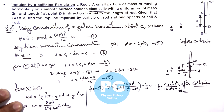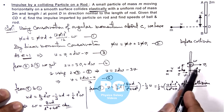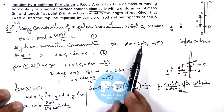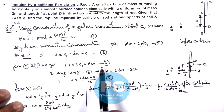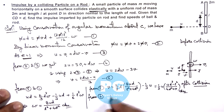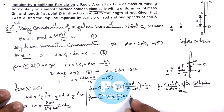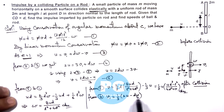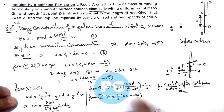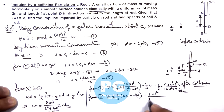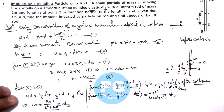The final speed of the rod v1 can be obtained from equation 4: v1 = (1/3)·(2u − d·ω). Substituting the value of omega, we get v1 = 2u·l²/[3·(4d² + l²)]. That is the result for the final velocity of the rod after collision.